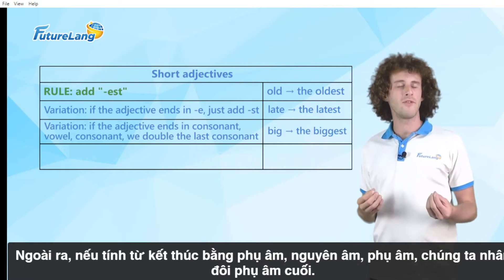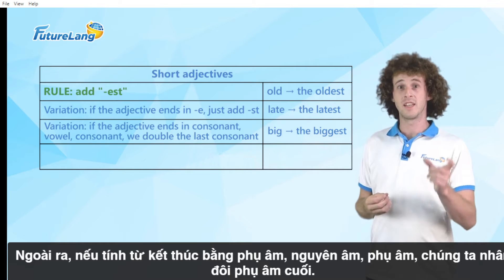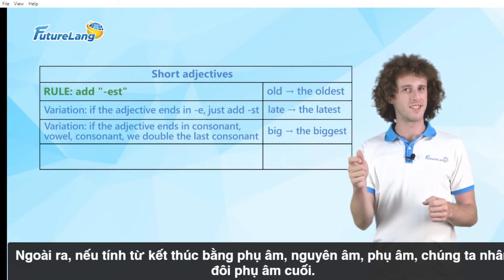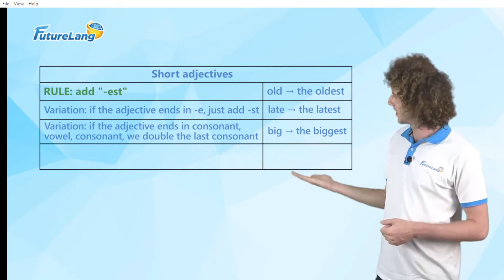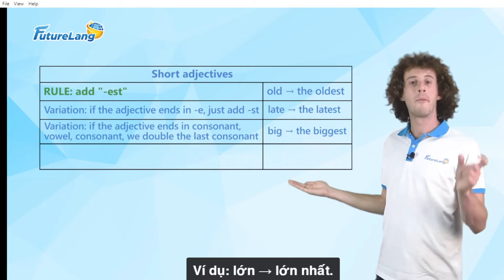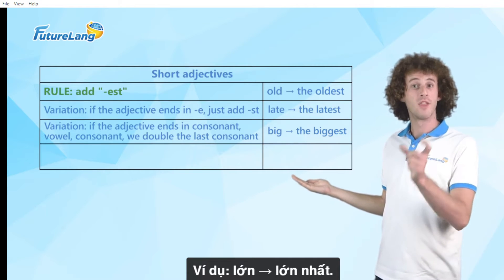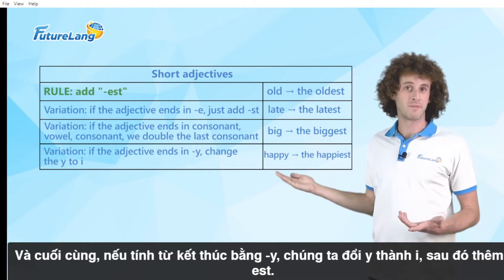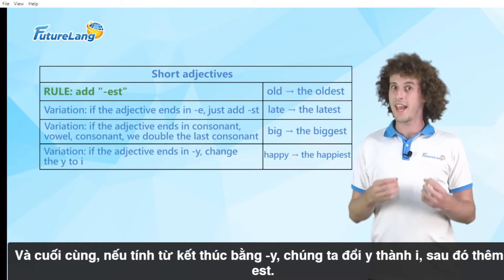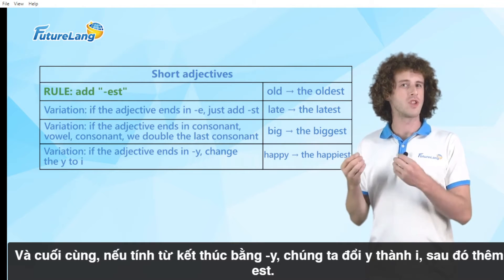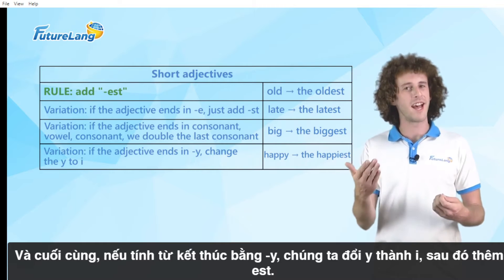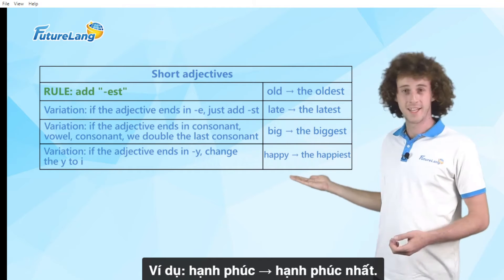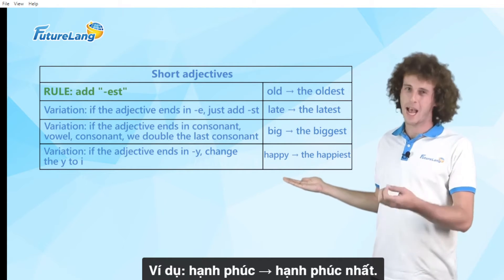Also, if the adjective ends in consonant-vowel-consonant, we double the last consonant. For example: big, the biggest. And finally, if the adjective ends in Y, we change the Y to I and then add EST. For example: happy, the happiest.